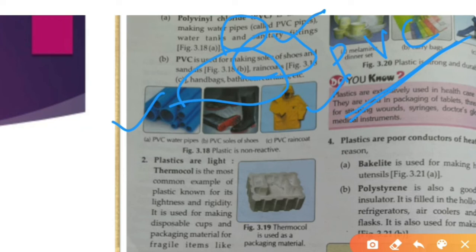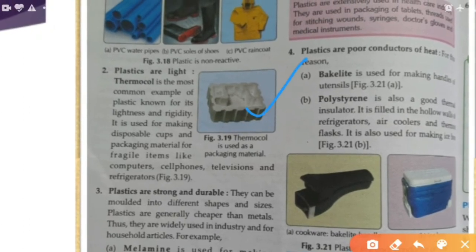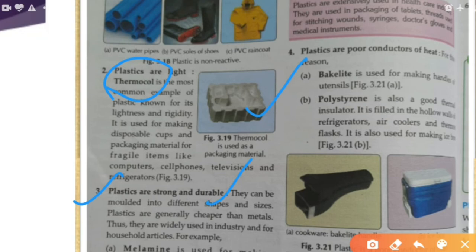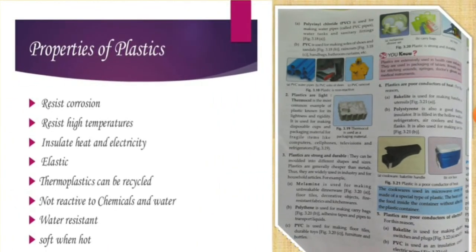Thermocol is also made from plastic and is used for packing material, computers, cell phones, and many things. Thermosetting plastic is used in making handles for cookware. Polystyrene is a very good insulator — the electric handle is made of it. Melamine is used to make cookware.